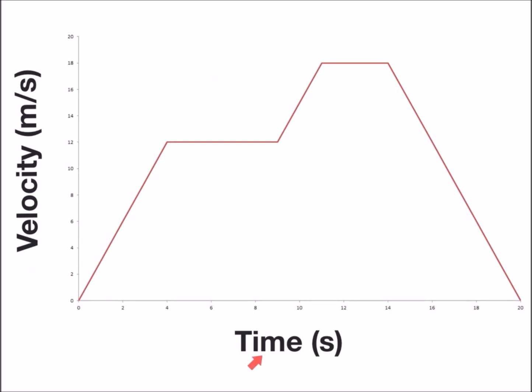The last graph we'll look at has time in seconds on the x-axis and velocity in meters per second on the y-axis. To begin the scenario we're going to start at the origin, zero comma zero, and we're going to increase in time and increase in velocity, so therefore we'll have a positive constant acceleration.